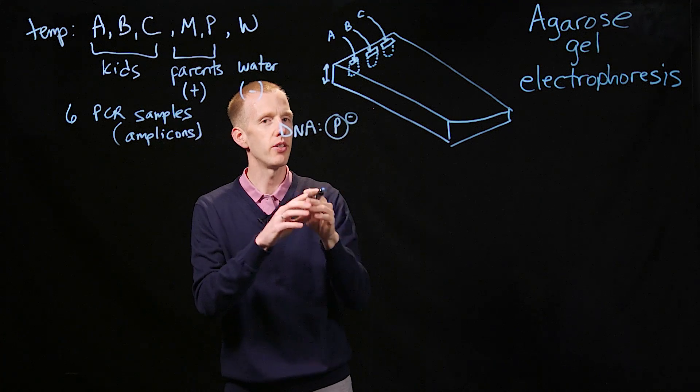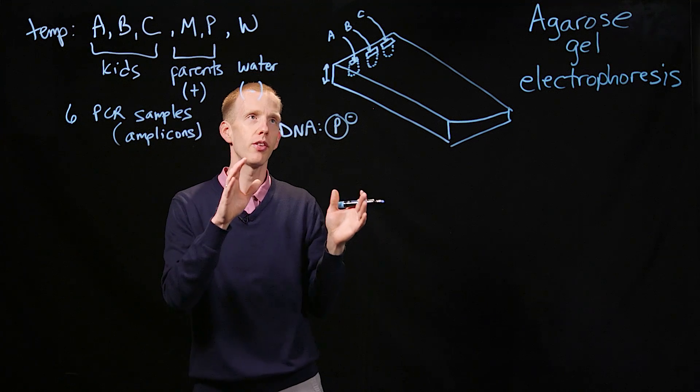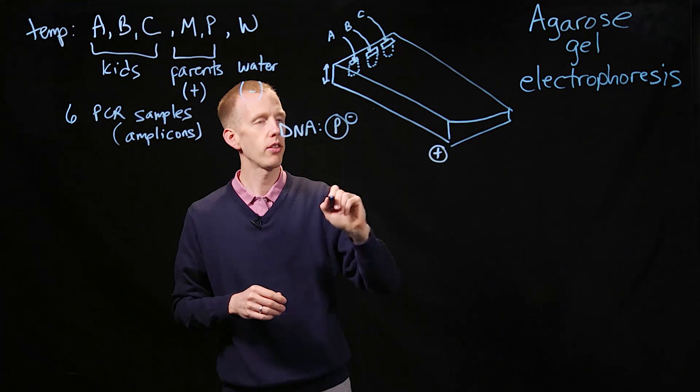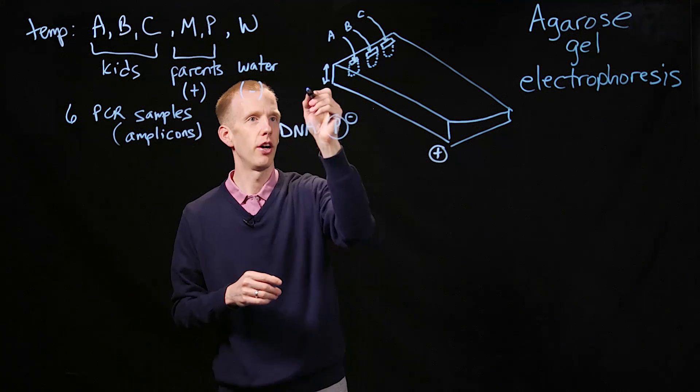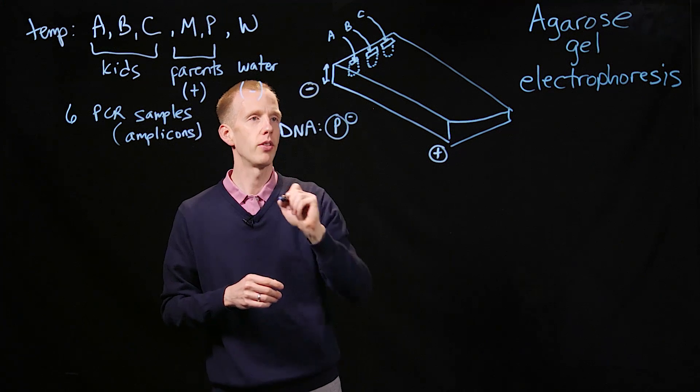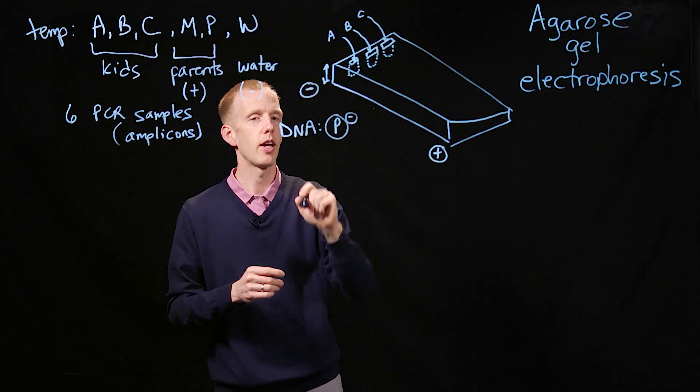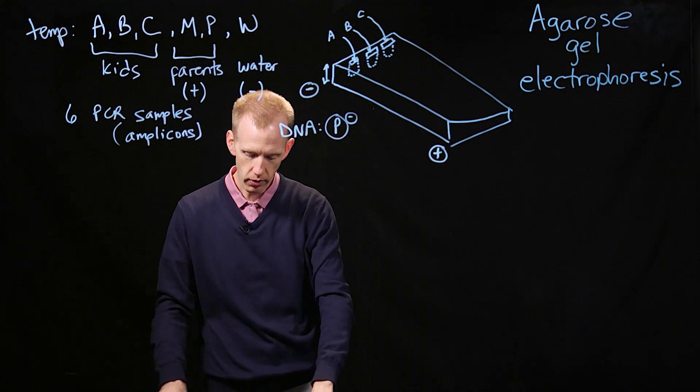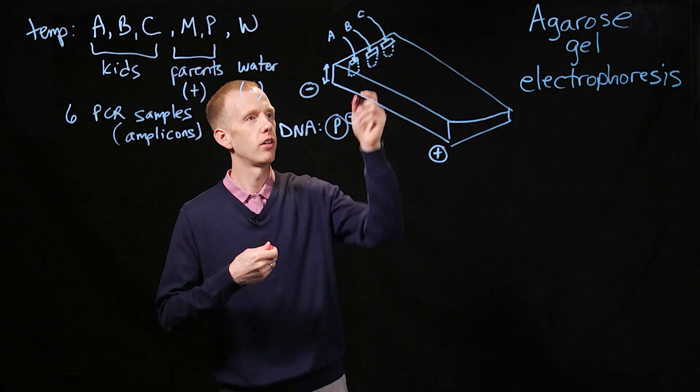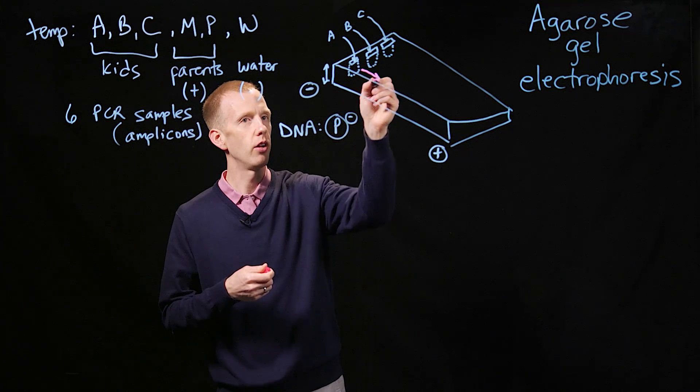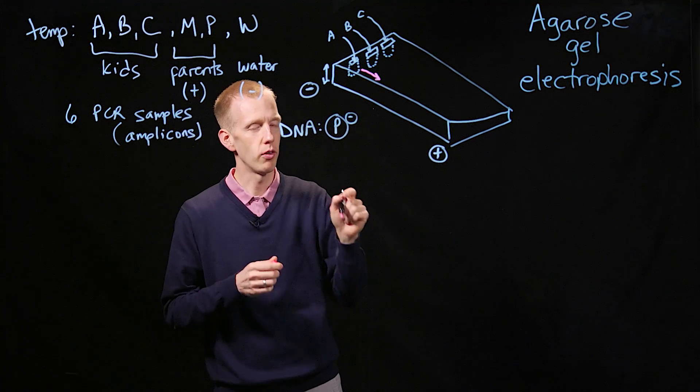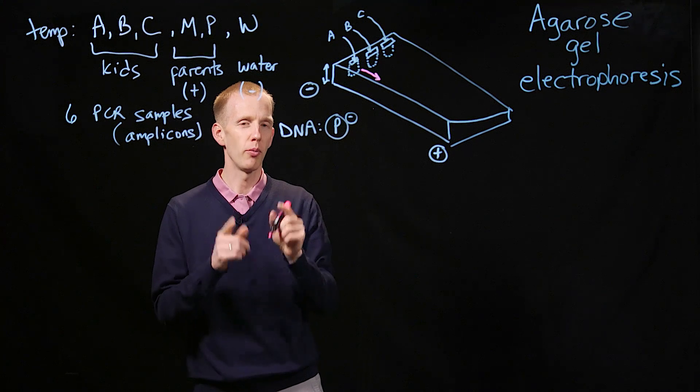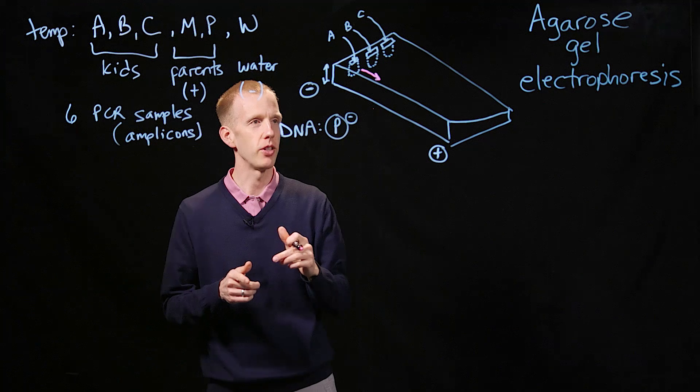And so the way that we separate these DNA molecules based on their size is we apply an electric field where we put the cathode at the far end of the gel and an anode at the near end of the gel, where we've loaded the samples. And when we apply this electric field, the DNA migrates down the gel because it's negatively charged. Those negative charges are attracted to the positive cathode.